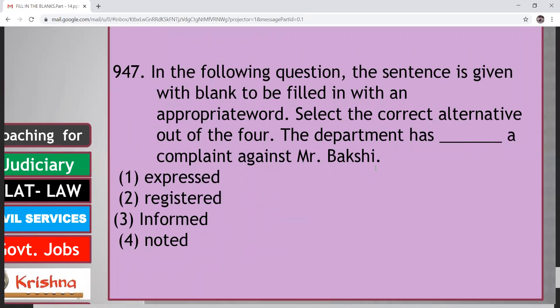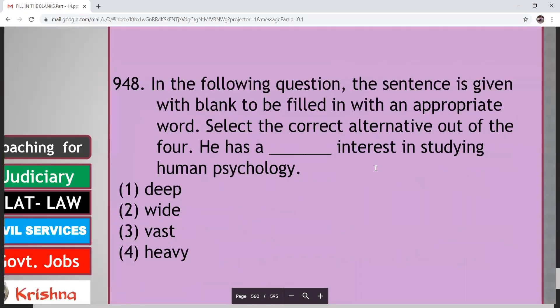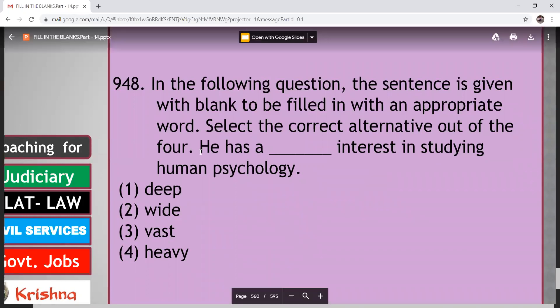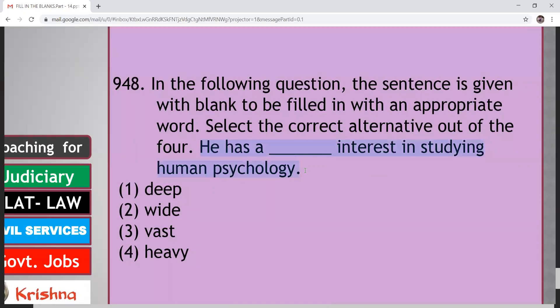In the following question, the sentence is given with blank to be filled in appropriate words. Select the correct alternative out of the four. So the sentence here is, department has dashed a complaint against Mr. Bakshi. Express, registered, informed, noted. Now what is here? Complaint is done with Mr. Bakshi. Department has registered a complaint against Mr. Bakshi. Next. He has a dash interest in studying human psychology. Deep, wide, vast, heavy. So here he has a deep interest. Deep interest means very extreme interest.